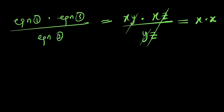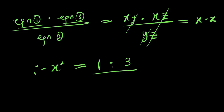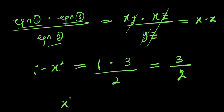So from here we can have x squared equals equation 1 in terms of value, which is 1, times equation 3, which is 3, divided by equation 2, which is 2. So this gives us 1 times 3, that is 3 divided by 2. So x squared equals 3 over 2. Take note of that.